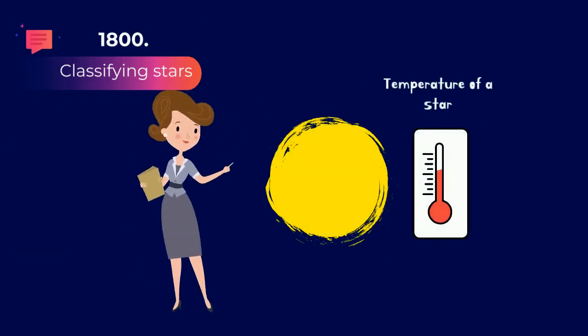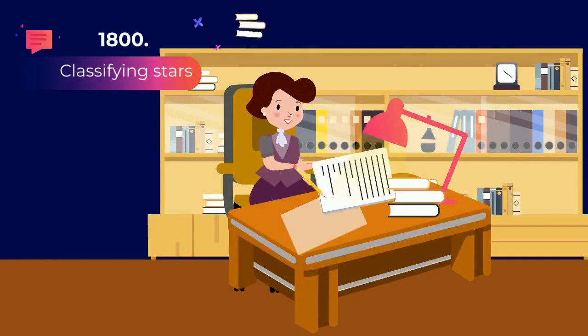Cecilia Payne-Gaposchkin discovered a better way of classifying stars by their temperature. Annie Jump Cannon took that information and formed this classification.